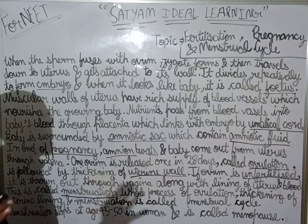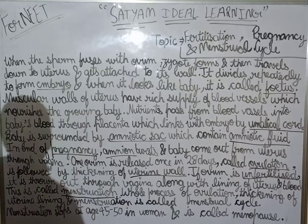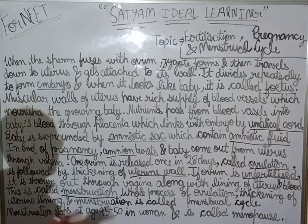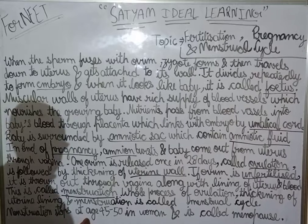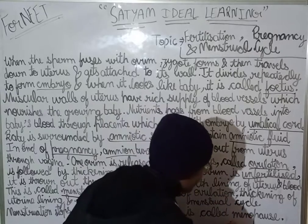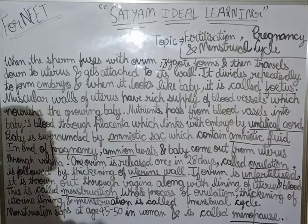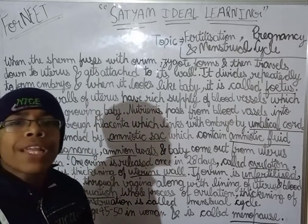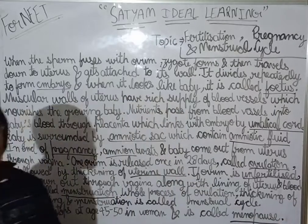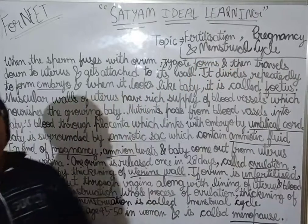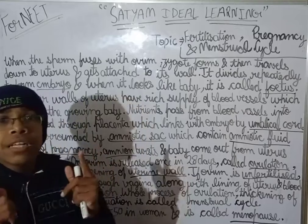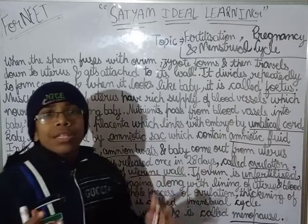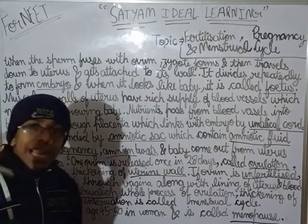Menstruation stops at around the age of 45 to 50 in women, and this is known as menopause. So to summarize: fertilization, pregnancy, ovulation, menstruation, and menopause have all been covered. Please let me know in the comment section how much you understood. Bye guys, we'll meet again very soon.